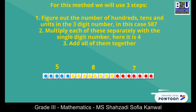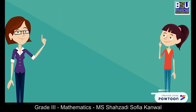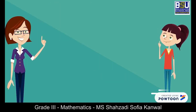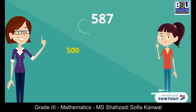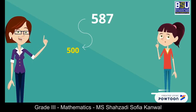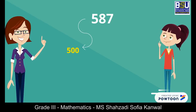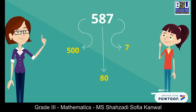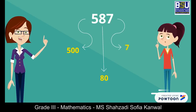Finally we will add all of them together. Sarah, can you help me with step 1? Yes teacher. The 5 in 587 represents 500, the 8 represents 80 and 7 represents 7. Excellent.